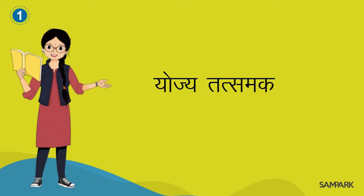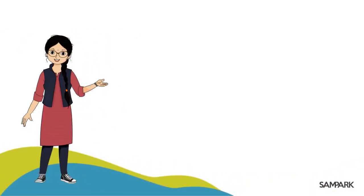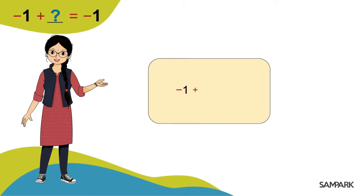योज्य तत्समक। बच्चों, क्या तुम इस प्रश्न को हल कर सकते हो? माइनस एक में क्या जोड़ा जाए जिससे की योगफल भी माइनस एक ही मिले? सोचो, ध्यान से देखो — यहाँ माइनस एक के मान में कोई बदलाव नहीं आया। ऐसे तो जीरो जोड़ने पर होता है। तो माइनस एक प्लस जीरो हुआ माइनस एक।